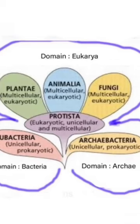Biologists classify all living things into three domains and six kingdoms to show the evolution of life into the tree of life.